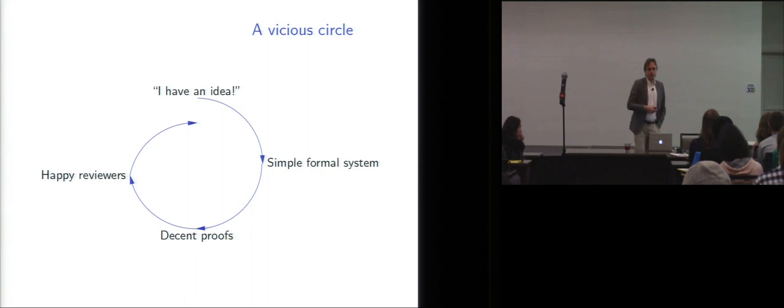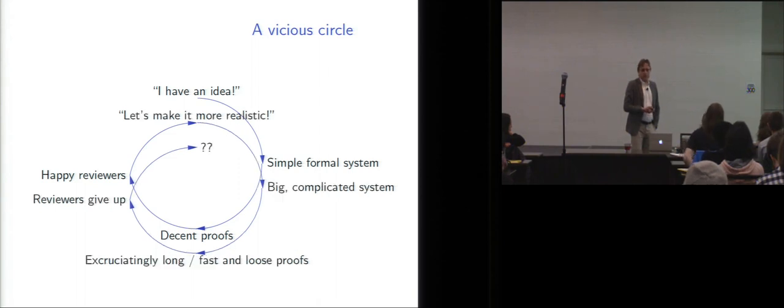And so it's quite easy to fall in a vicious circle. You start with a nice idea, and your first formalization is simple, OK? You leave aside a lot of details. So you get a simple formal system where you can do decent proofs, and then that makes reviewers happy, and they accept your paper. And then you feel more confident, and so you want to make it more realistic and closer to actual programming practice. And you end up with a big, complicated system. Your proofs become excruciatingly long, or fast and loose.